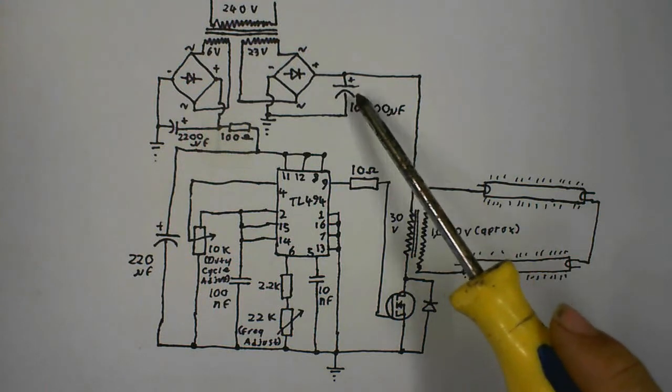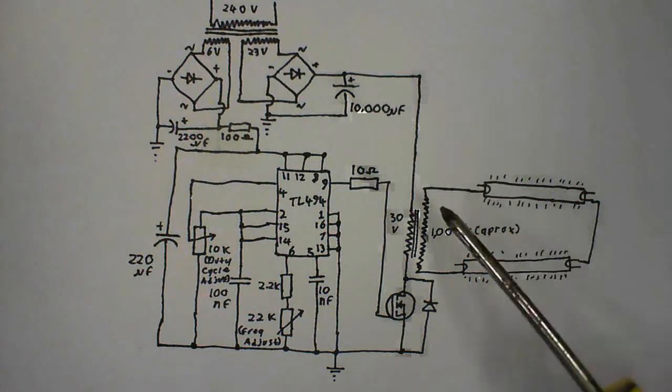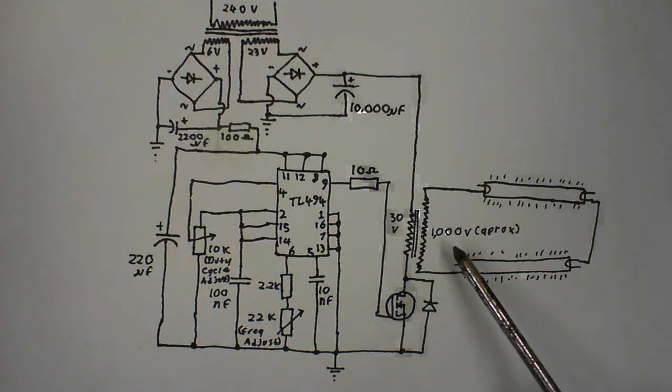This is actually my bank of 10, 1,000 microfarad capacitors. And after that, there's transformer that steps the voltage up to 1,000 volts to power the tubes.